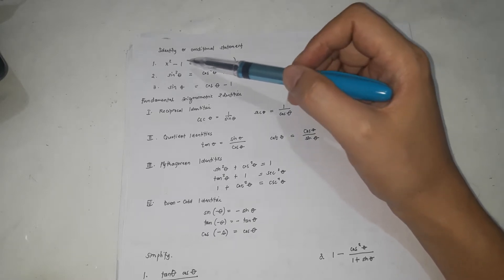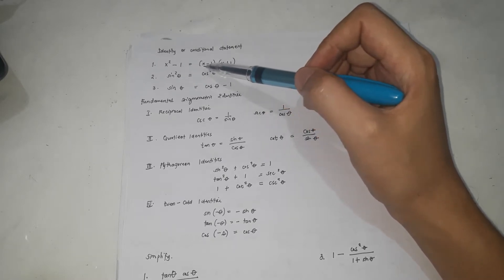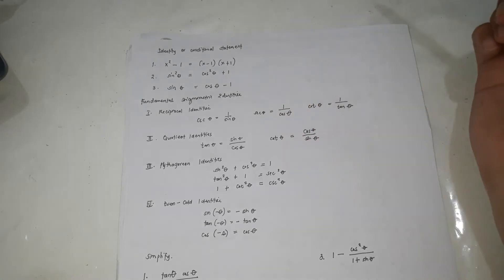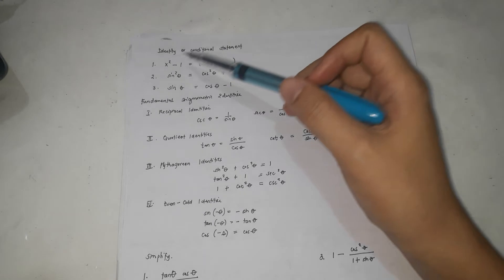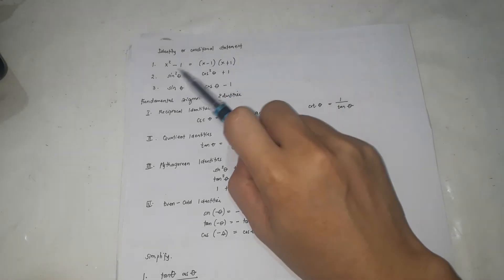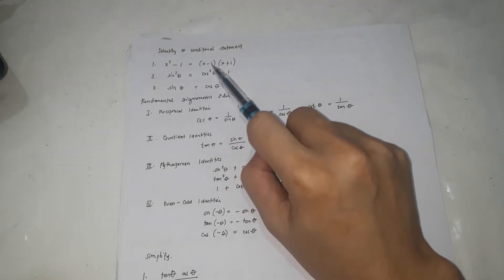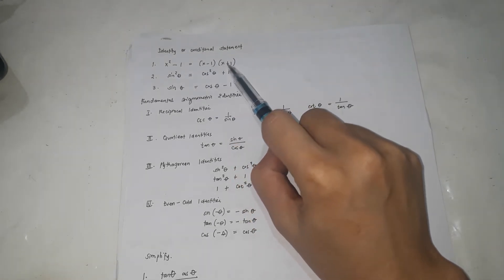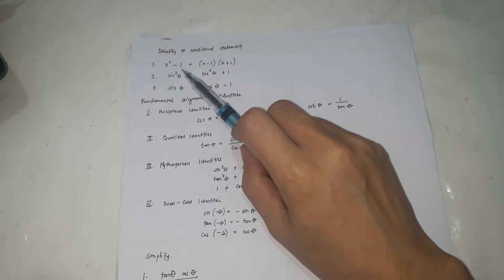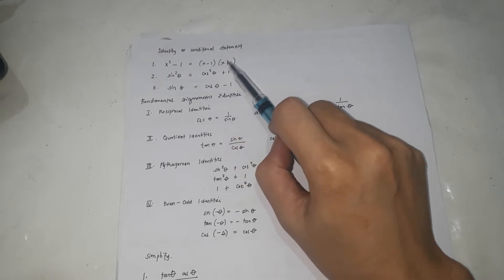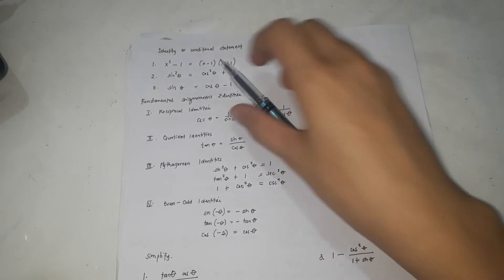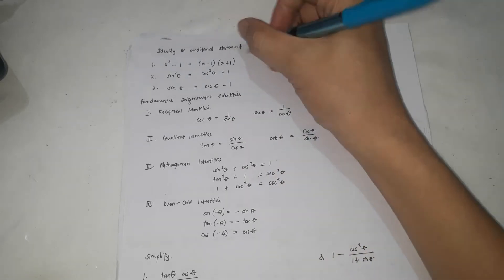For number 1: x squared minus 1 is equal to (x minus 1)(x plus 1). One way of identifying it — x squared minus 1, its factored form is (x minus 1)(x plus 1). They are just equal. Therefore, this is an identity.